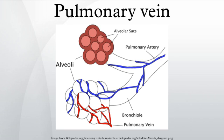The pulmonary veins are large blood vessels that receive oxygenated blood from the lungs and drain into the left atrium of the heart. There are four pulmonary veins, two from each lung. The pulmonary veins are among the few veins that carry oxygenated blood.